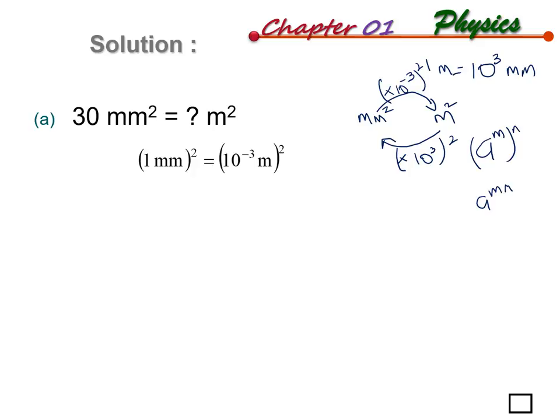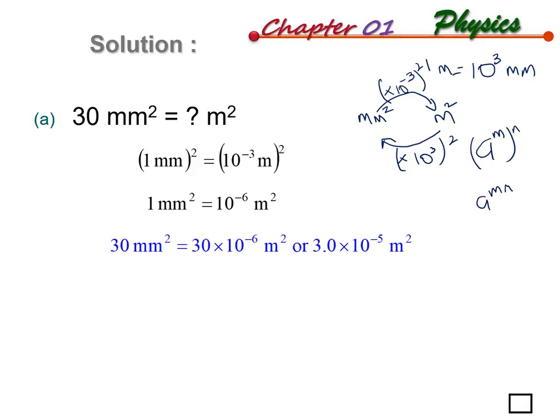Converting millimeters to meters: (10 to the power of negative 3) squared gives 10 to the power of negative 6. So the correct answer is 30 times 10 to the power of negative 6, or equivalently 3.0 times 10 to the power of negative 5 meter square.